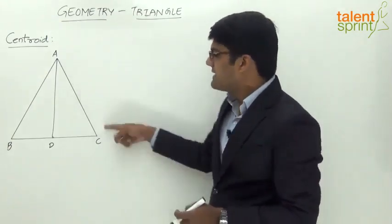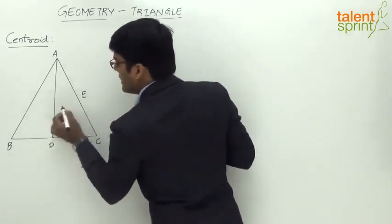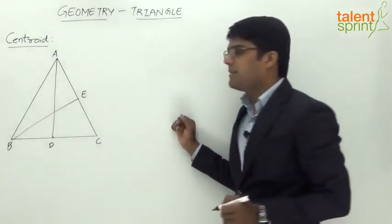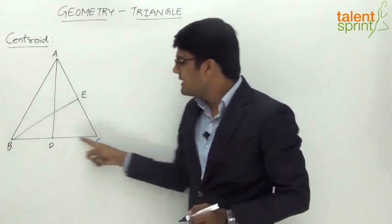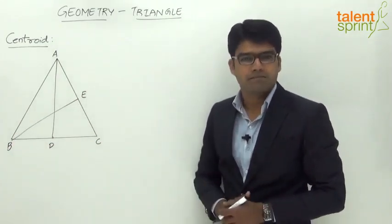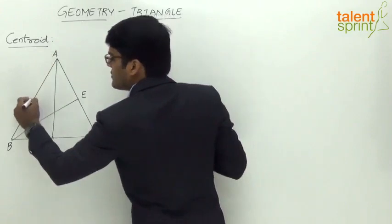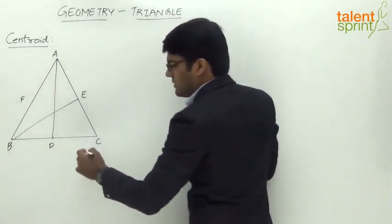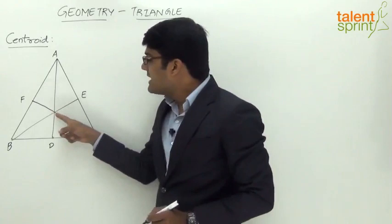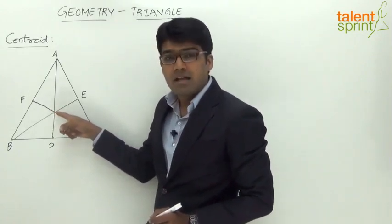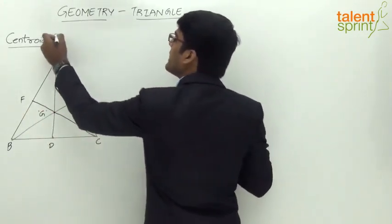For example, if we look at side AC, let us take the midpoint of side AC as E. The line joining B to E will be the second median BE. Now BE again divides triangle ABC into two equal parts. The third median would be the line joining vertex C with the midpoint of AB — let us assume the midpoint of AB is F, so CF is the third median. If you observe, all three medians intersect at a common point, which is called the centroid of the triangle, denoted by G.